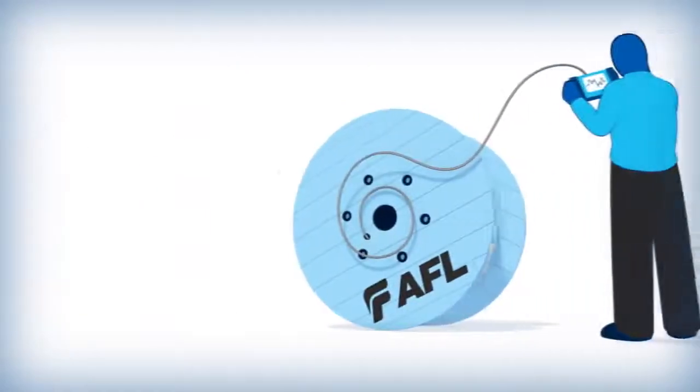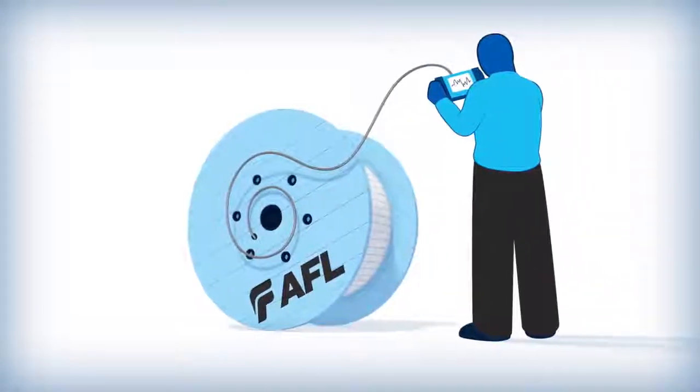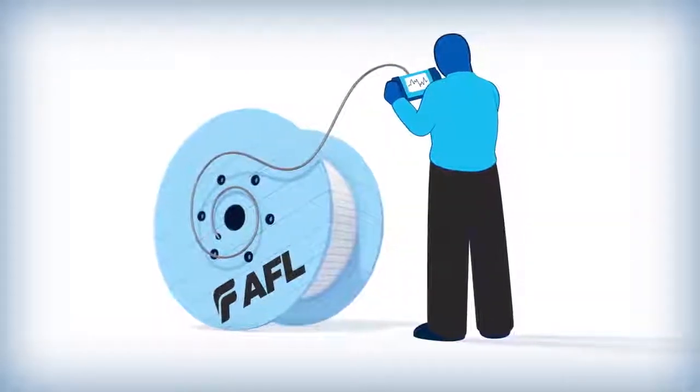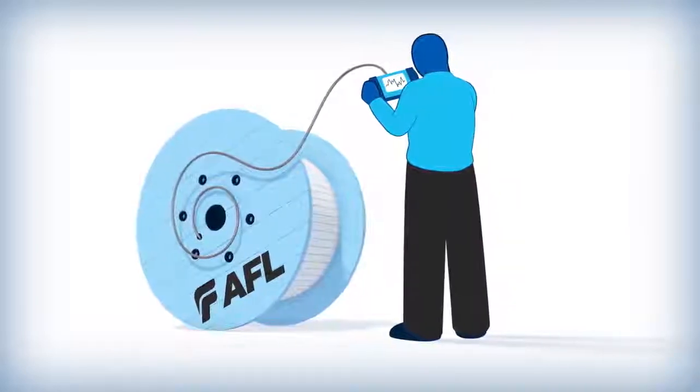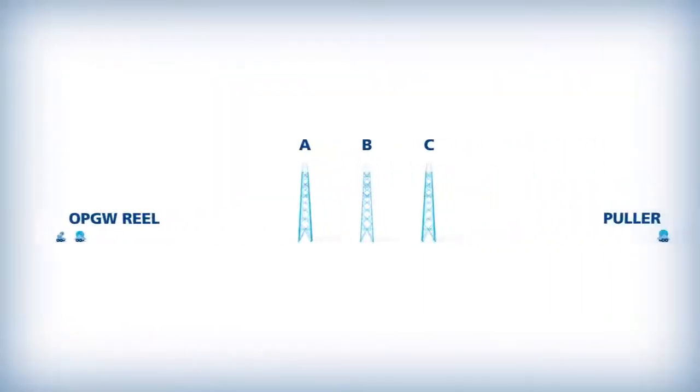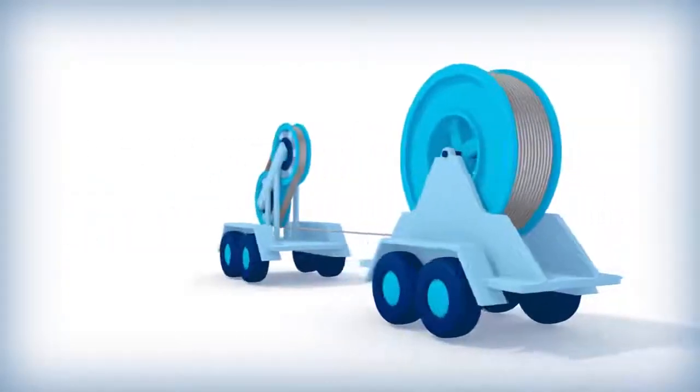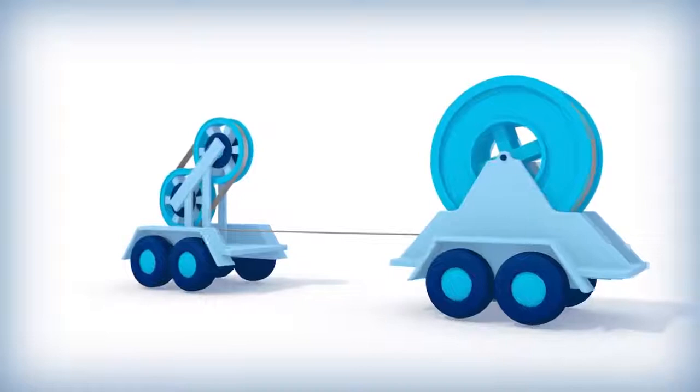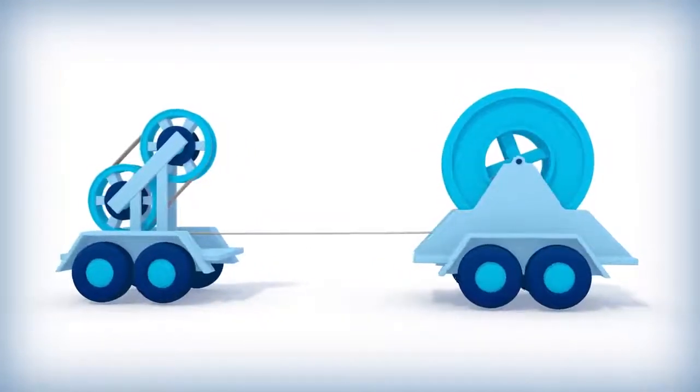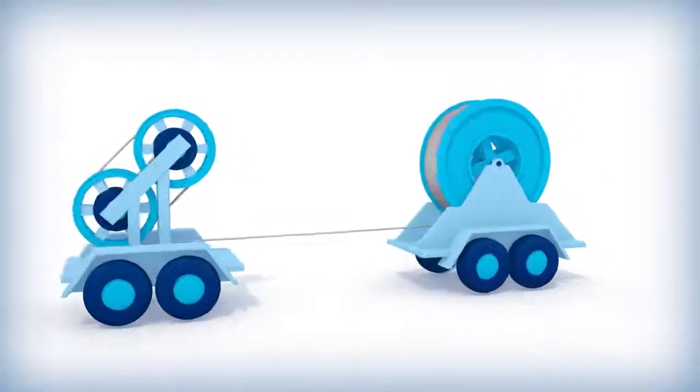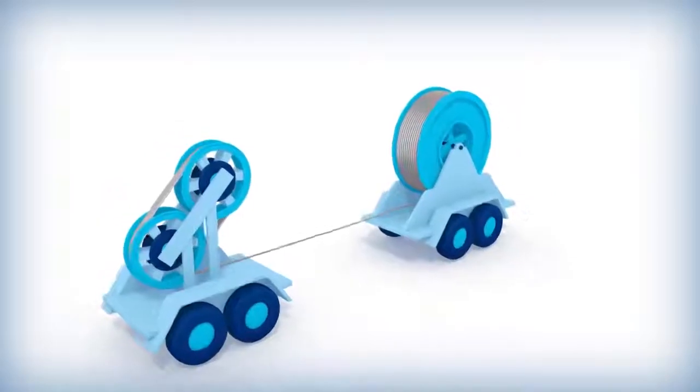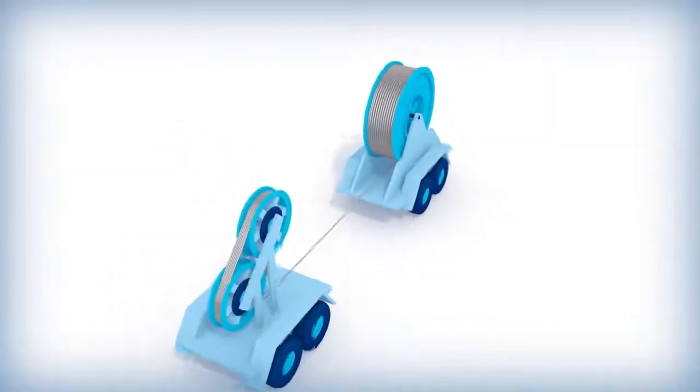To ensure the OPGW has not been damaged, it should be tested prior to and after installations. AFL recommends using the controlled tension stringing method. Because the OPGW reel is not designed to withstand the braking forces that arise during stringing, AFL recommends using a multiple groove bullwheel tensioner.